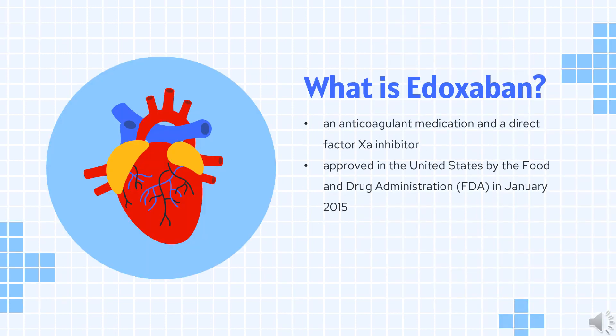What is Edoxaban? Edoxaban, sold under the brand name Lixiana among others, is an anticoagulant medication and a direct Factor Xa inhibitor. It is taken by mouth.